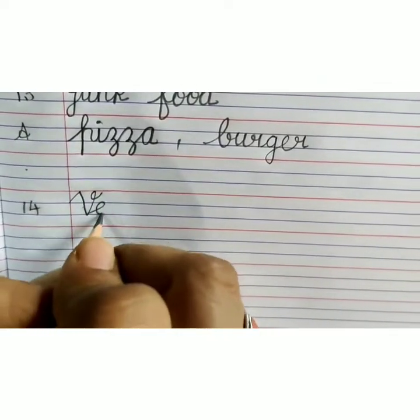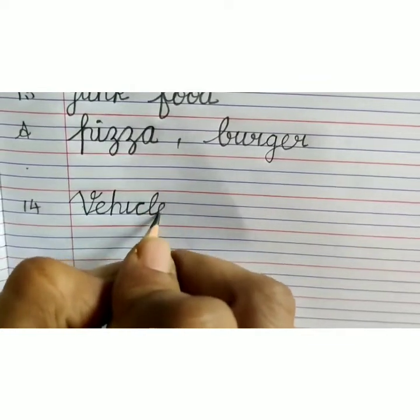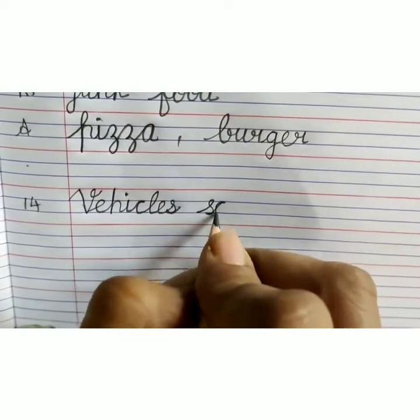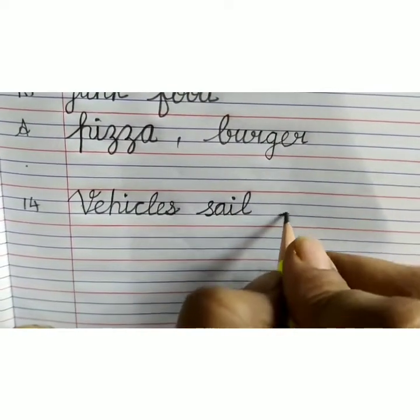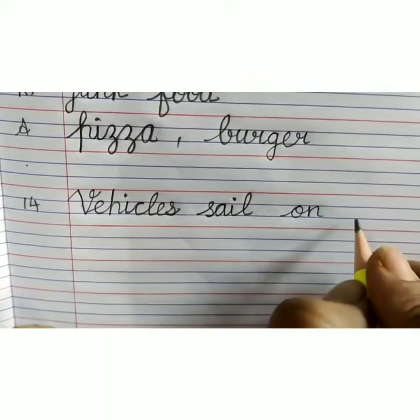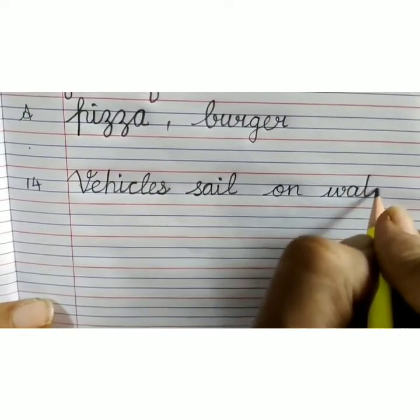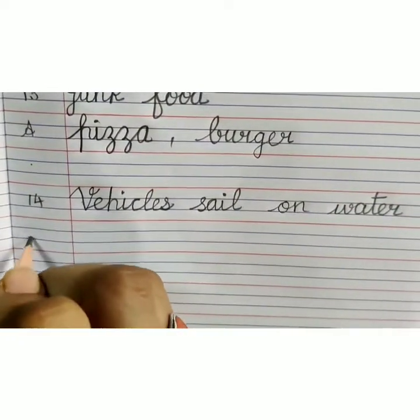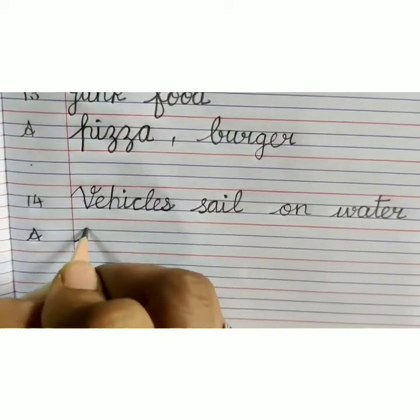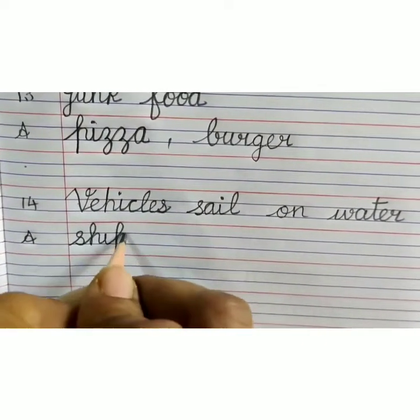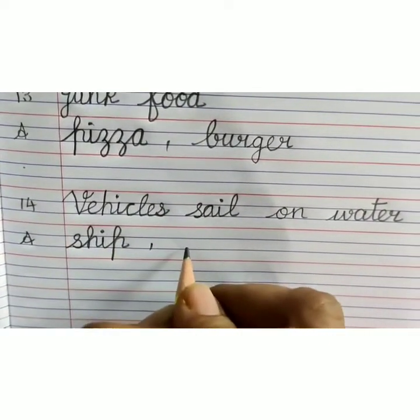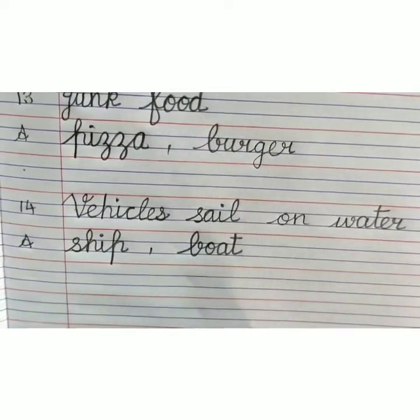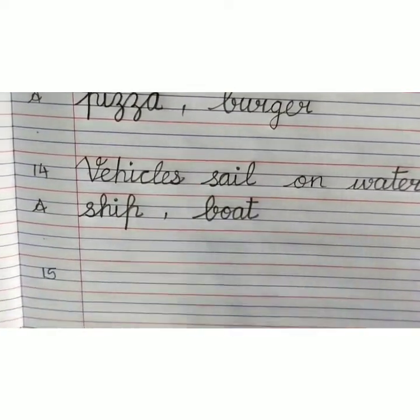V-E-H-I-C-L-E-S, vehicles, S-A-I-L, sail, O-N, on, W-A-T-E-R, water. Vehicles sail on water. Answer: S-H-I-P, ship, comma, B-O-A-T, boat. Leave one line, write number 15.